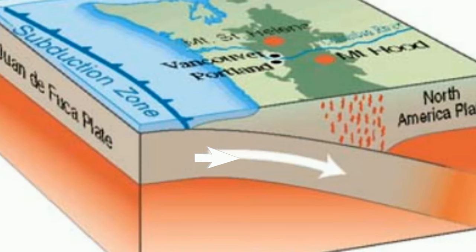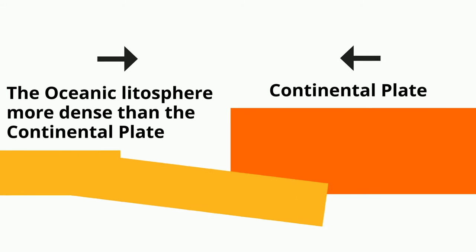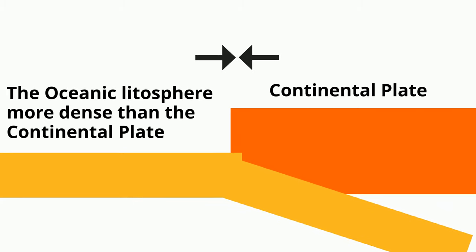Oceanic and continental convergent boundaries occur when oceanic crust subducts underneath the continental crust. The oceanic lithosphere has a greater density than the continental lithosphere and as it collides with the continental crust, it subducts underneath the continental lithosphere.